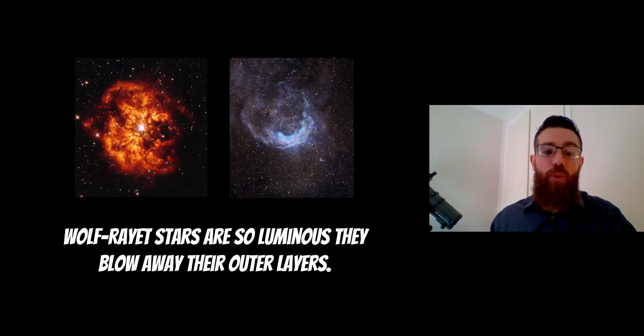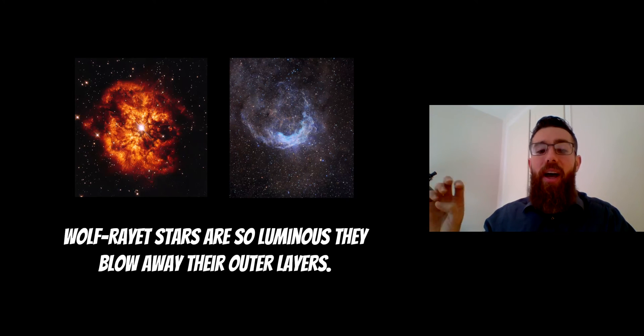Now these stars, these Wolf-Rayet stars are so luminous that they do blow these layers apart. This is a couple of images from real stars that are at the Eddington limit and you have these very bright luminous stars at the center and then their outer layers are being lost into space and they very quickly lose a lot of mass through this process.